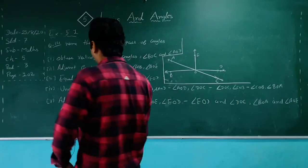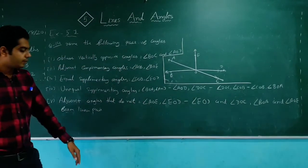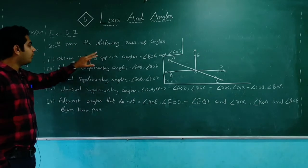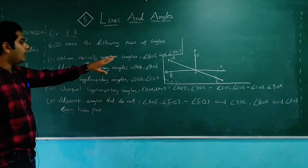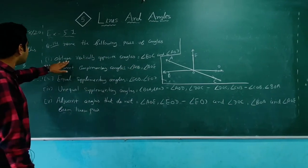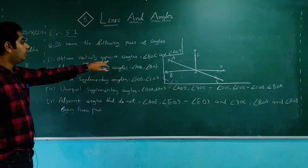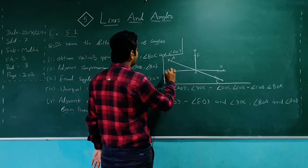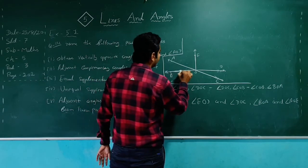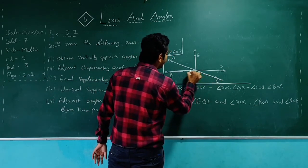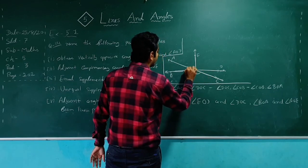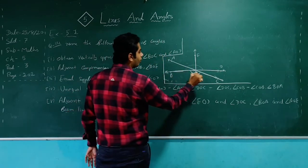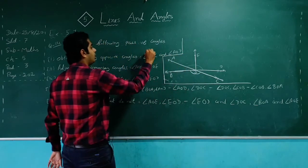Now the last question of exercise 5.1 — question number 14: name the following pairs of angles using the figure. Part 1: obtuse vertically opposite angles. Looking at the figure, the large obtuse angles are BOC and AOD, so BOC and AOD are the obtuse vertically opposite angles.